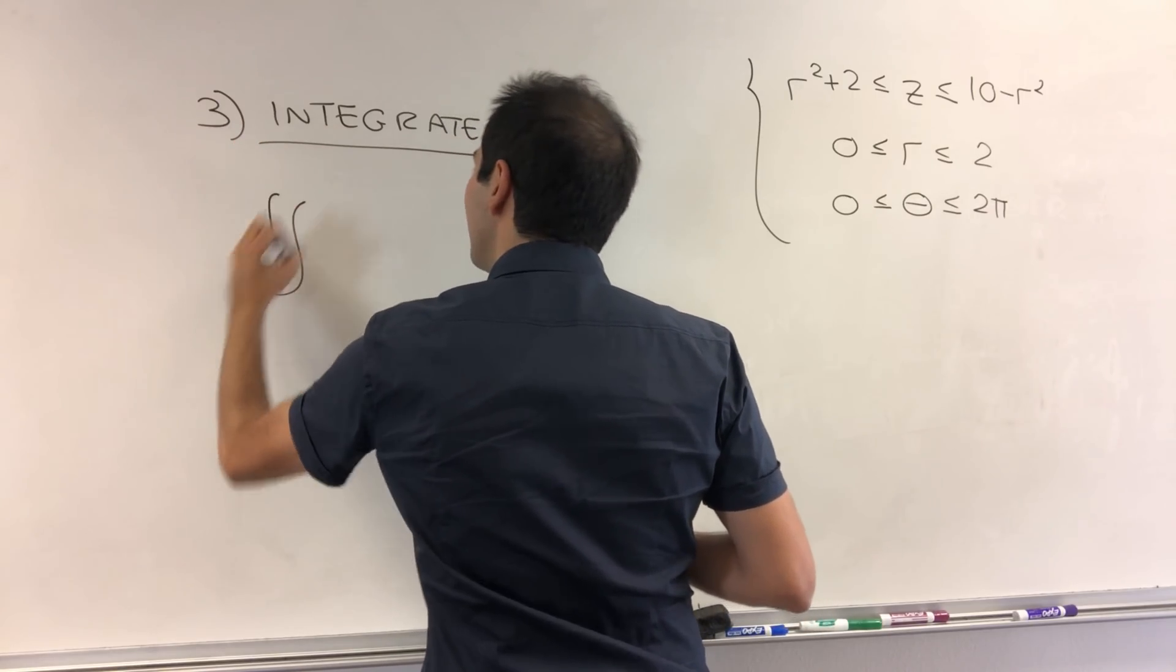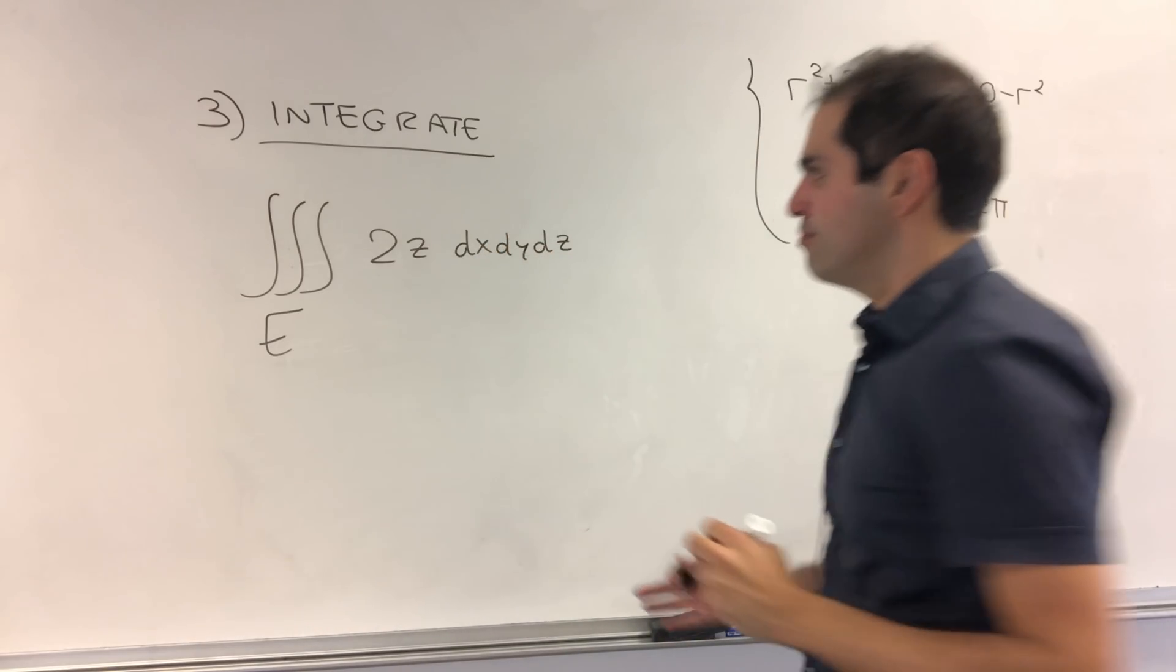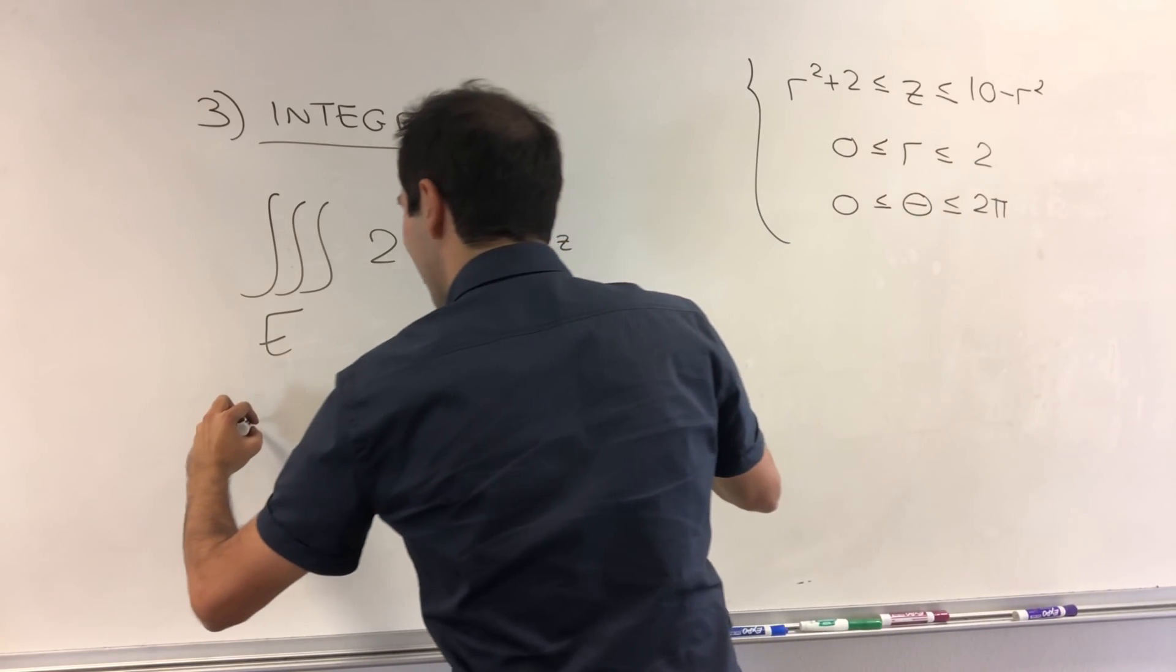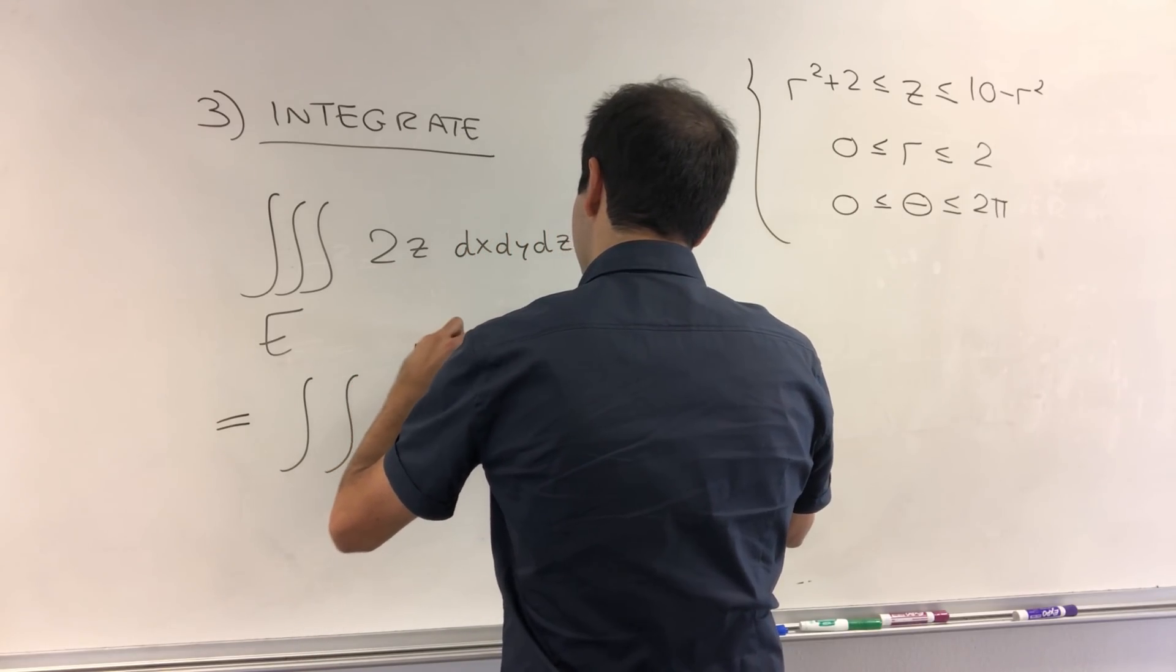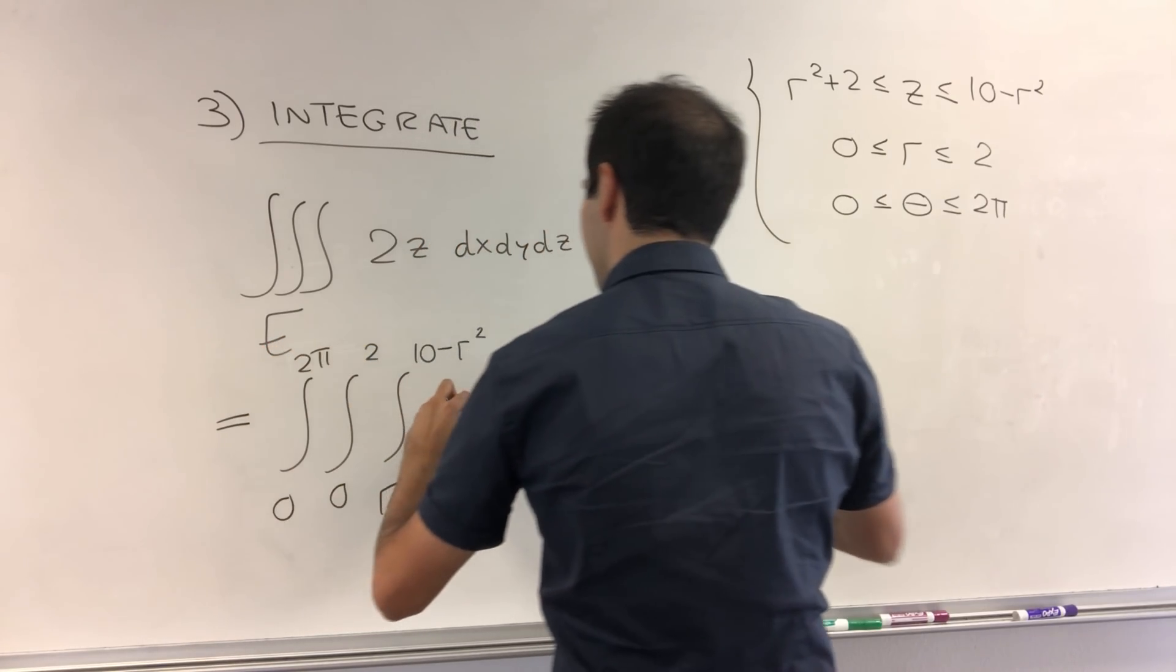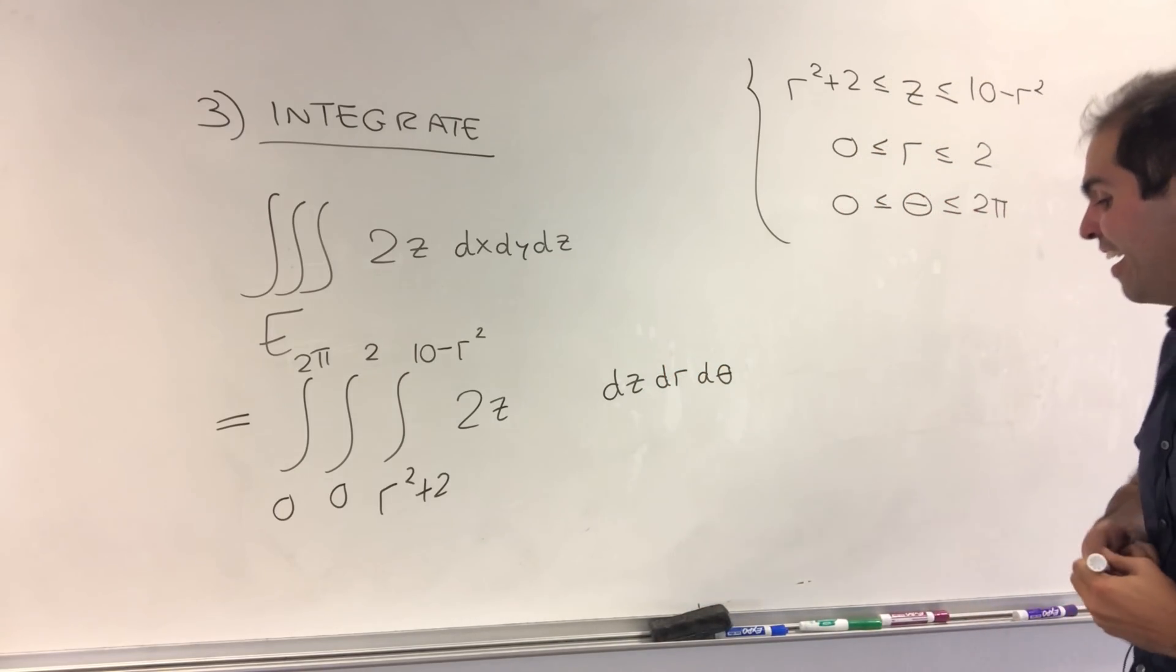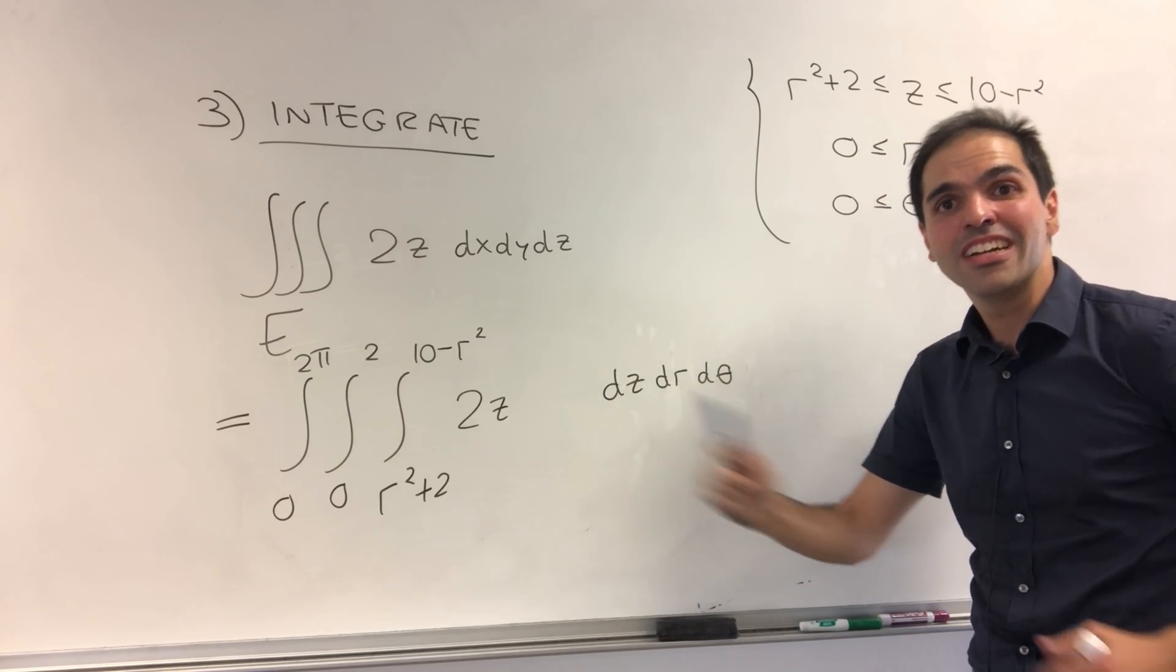So what did we want to do? The triple integral of 2z dx dy dz. And do emphasize that the function usually has nothing to do with the region. Those are two different things. And now that we have our inequalities, we can finally plug things in. So z is between r squared plus 2 and 10 minus r squared. r is between 0 and 2. theta is between 0 and 2 pi, 2z. And again, first comes z. And then r is between 0 and 2. Theta is between 0 and 2 pi. And do not forget the super, super important factor here, which is r.